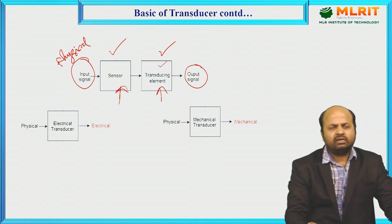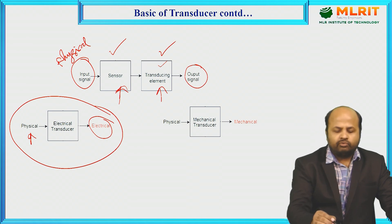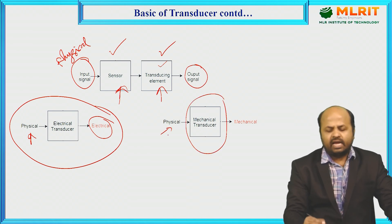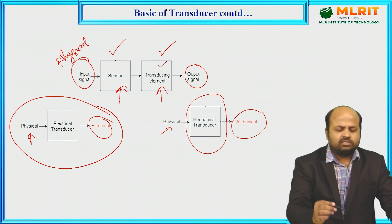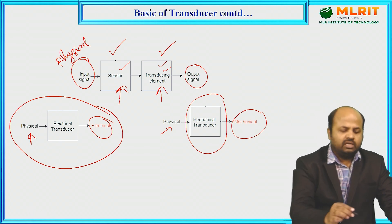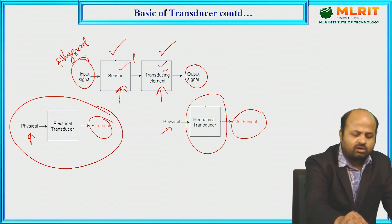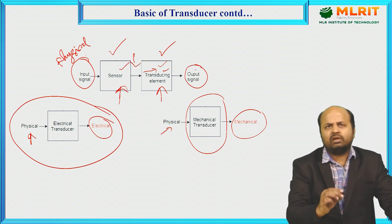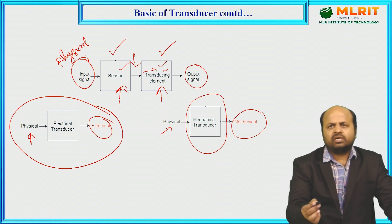For an electrical transducer, a physical quantity is given as input and at the output we expect an electrical signal. For a mechanical transducer, we give the physical quantity and expect some mechanical type of output, such as displacement. The transducing element may be capacitive, resistive, or inductive type, which we will explore in later slides.